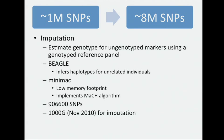Getting from 1 million SNPs to 8 million SNPs is done using imputation, wherein we estimate genotype at ungenotyped markers using a genotype reference panel. In this case, the 1,000 Genomes was our reference panel. We used Beagle to infer haplotypes for unrelated individuals and Minimac to implement the actual imputation. That got us to about 16 million SNPs.